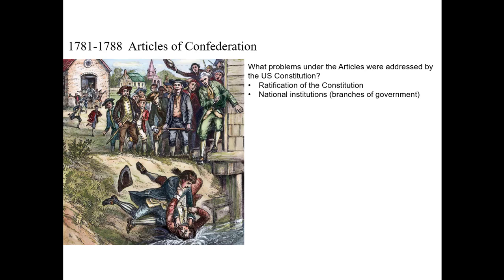Next, national institutions: when they wrote the Articles of Confederation, they only created one branch of government — Congress — to write laws. But it was up to the states to enforce those policies because there was no executive branch. There was also no federal court system to resolve disputes between the states. If two states had disputes over boundaries, water rights, or trade, there was no national court system to resolve them.